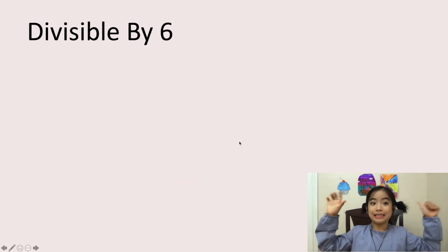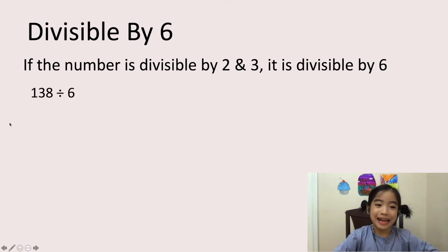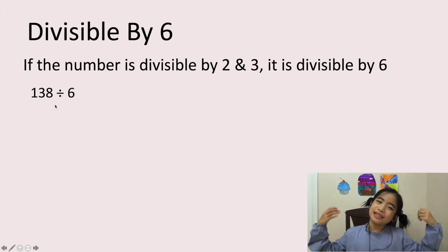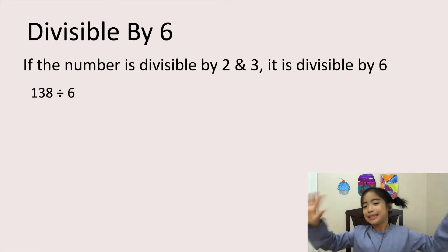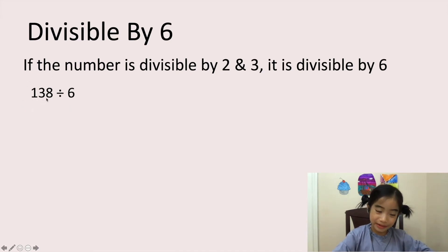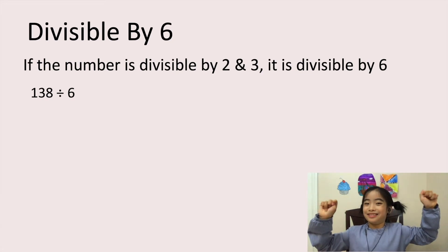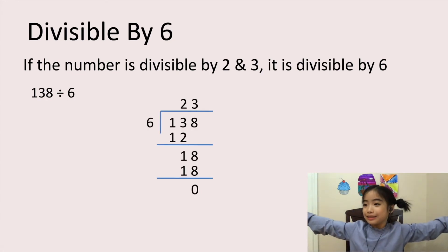Now let's look at divisible by 6. The rule is, if the number is divisible by 2 and 3, it is divisible by 6. Let's look at my example. Is 138 divisible by 6? Well, first of all, 138 is an even number, so it is divisible by 2. Now let's add all the numbers together. 1 plus 3 plus 8 equals 12. So 12 is divisible by 3, so 138 is divisible by 3. So 138 is divisible by 6. Here is my long division.